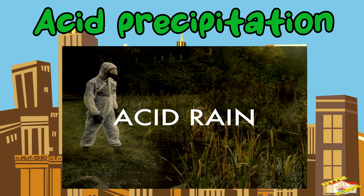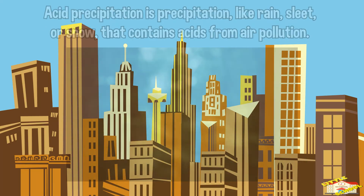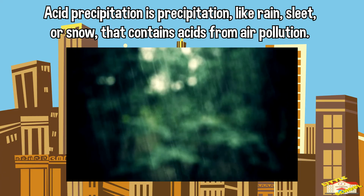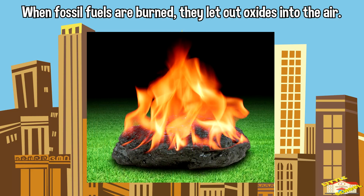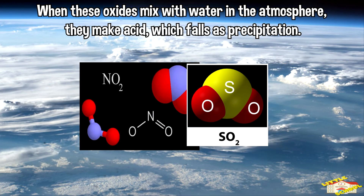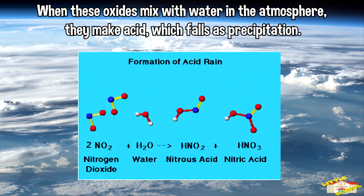Let's talk about acid precipitation. Acid precipitation is precipitation, like rain, sleet, or snow, that contains acids from air pollution. When fossil fuels are burned, they let out oxides into the air. When these oxides mix with water in the atmosphere, they make acid, which falls as precipitation.